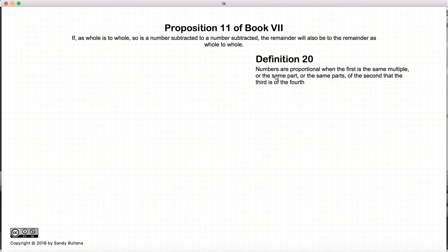So the definition is numbers are proportional when the first is the same multiple, or the same part, or the same parts of the second that the third is to the fourth. And what that basically means is, if A and B are proportional, are in the same proportion as C and D, then A is equal to some fraction of B, then C will also be equal to some fraction of D. And this is what it's meant to say that the numbers are proportional.